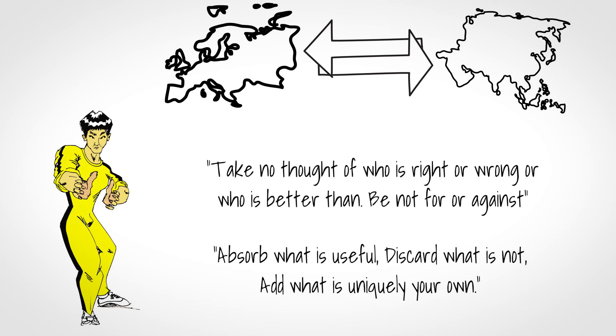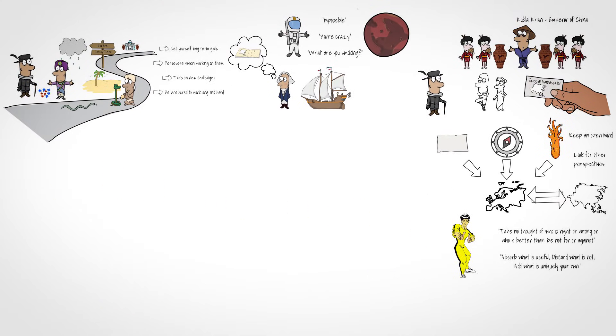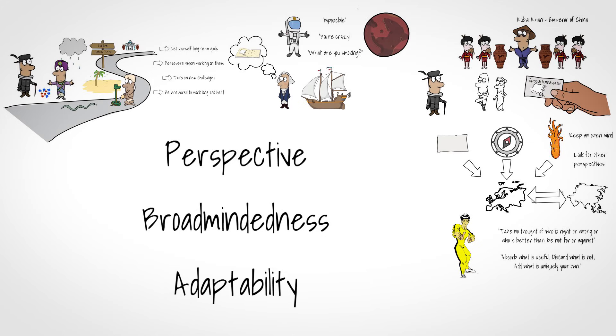Some of Marco Polo's most extraordinary claims are easy for us to understand today. He documented and interpreted things he came across that are now familiar to us but at the time were completely new to him. Paper money, for example, was unheard of in Venice but it had been used in the Far East for over a thousand years. His travels are still a valuable reminder of the importance of perspective, broad-mindedness and adaptability.